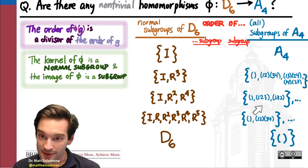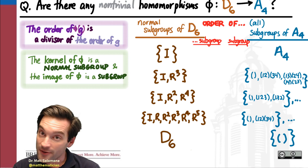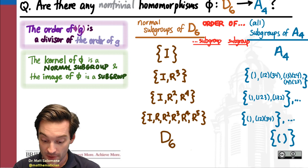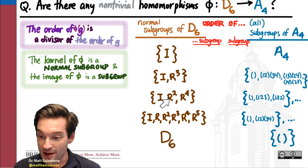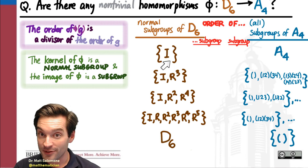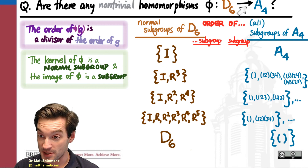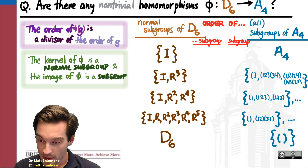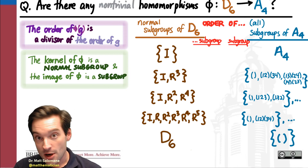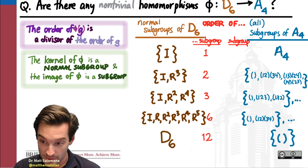These lists tend to be fairly short if we're lucky. The dihedral group of the hexagon only has five possible normal subgroups, so there are only five different kernels that a homomorphism from D6 into any group — let alone A4 — could have. So now let's start playing the order game with these.